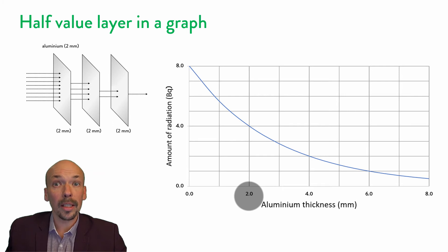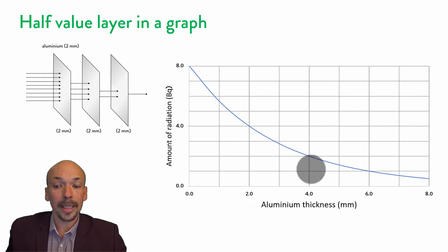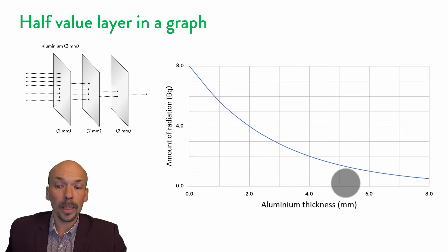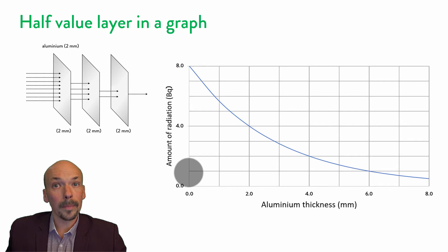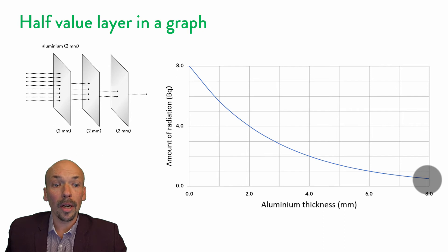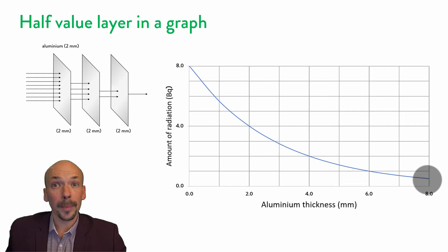If we add another 2 mm, then we see that it again drops by half — so it goes from 4 to 2. And if we add again 2 mm it will go to 1, and again 2 mm it will go to a half, and so on. So every time you add a half value layer, the radiation will be dropped by 50%.